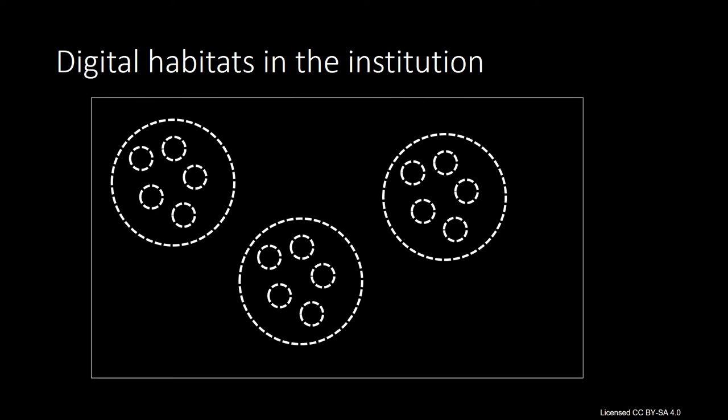So if we use digital habitats as the foundation for a genuine digital learning environment, then what might that look like? What are the common features? How are they organised? I'll start by looking at the scope of digital habitats in terms of their potential distribution through an institution. Then I'll discuss some of the key design principles that we've developed over the last two years as we've created digital habitats for learning. Finally, I'll talk about some of the key functionality that might be included in a digital habitat.